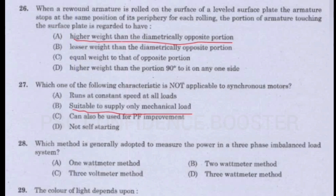Question number 28. Which method is generally adopted to measure the power in a three-phase imbalanced load system? Option A - One wattmeter method. Option B - Two wattmeter method. Option C - Three voltmeter method. Option D - Three wattmeter method. Answer is Option D: Three wattmeter method.